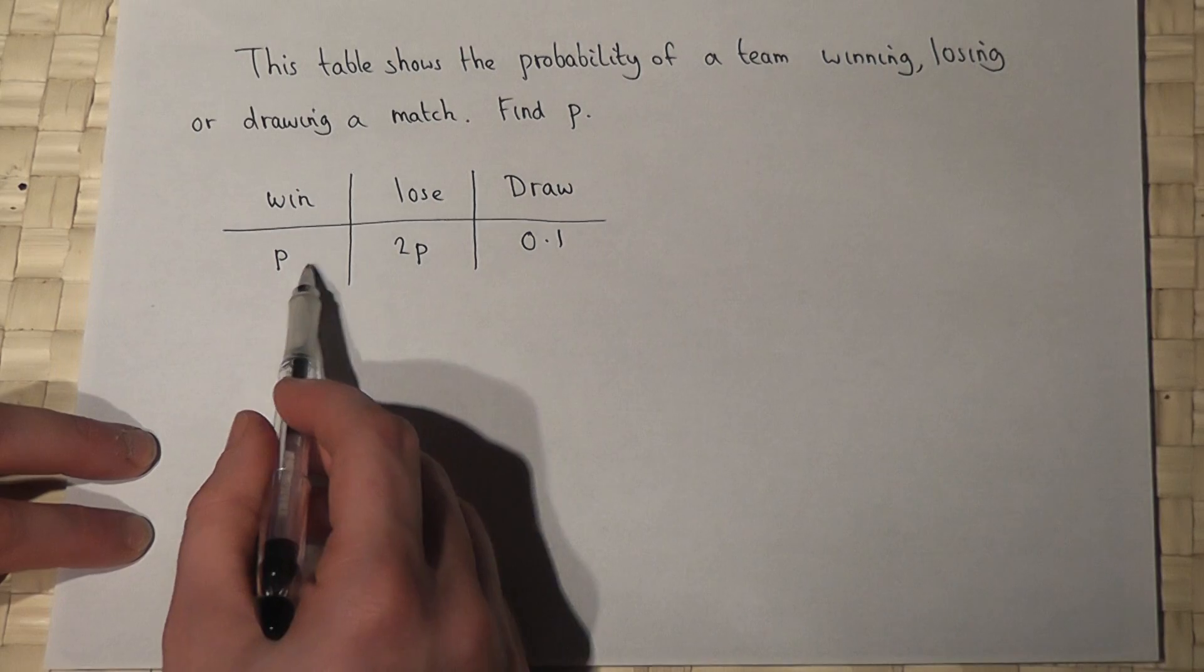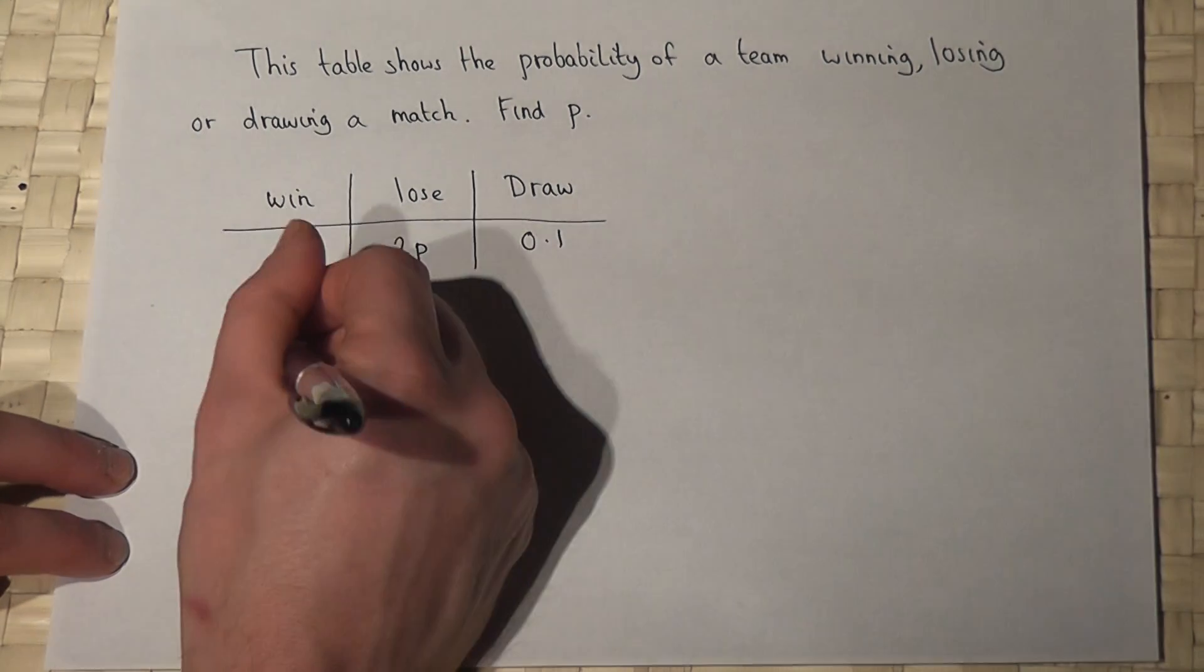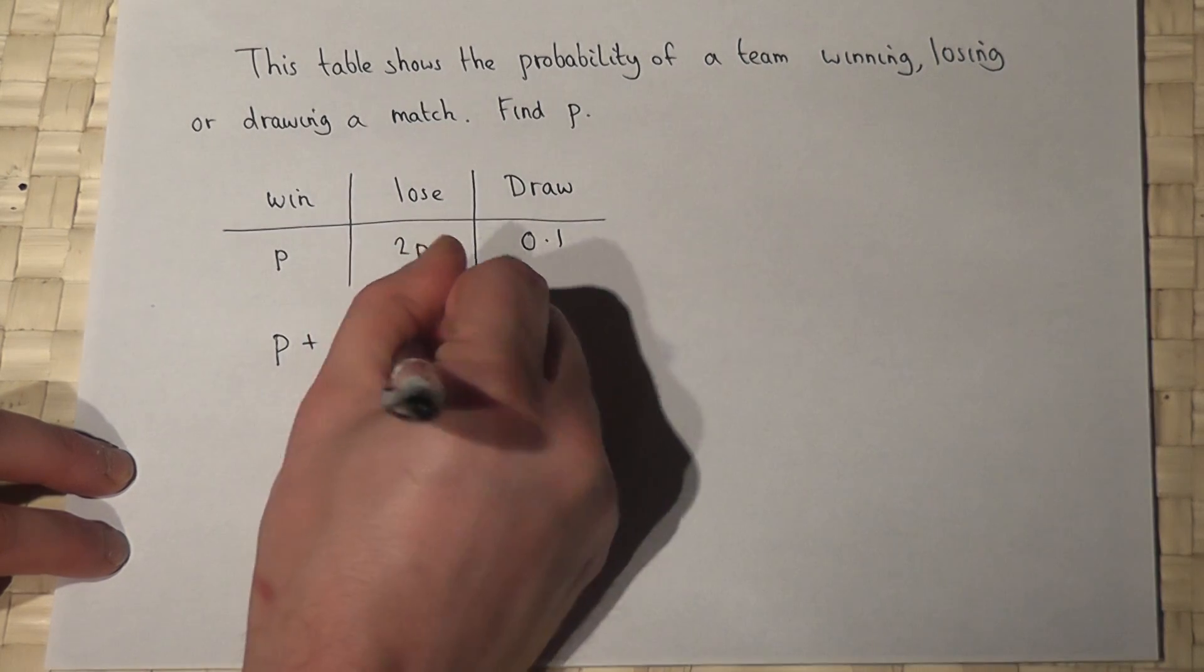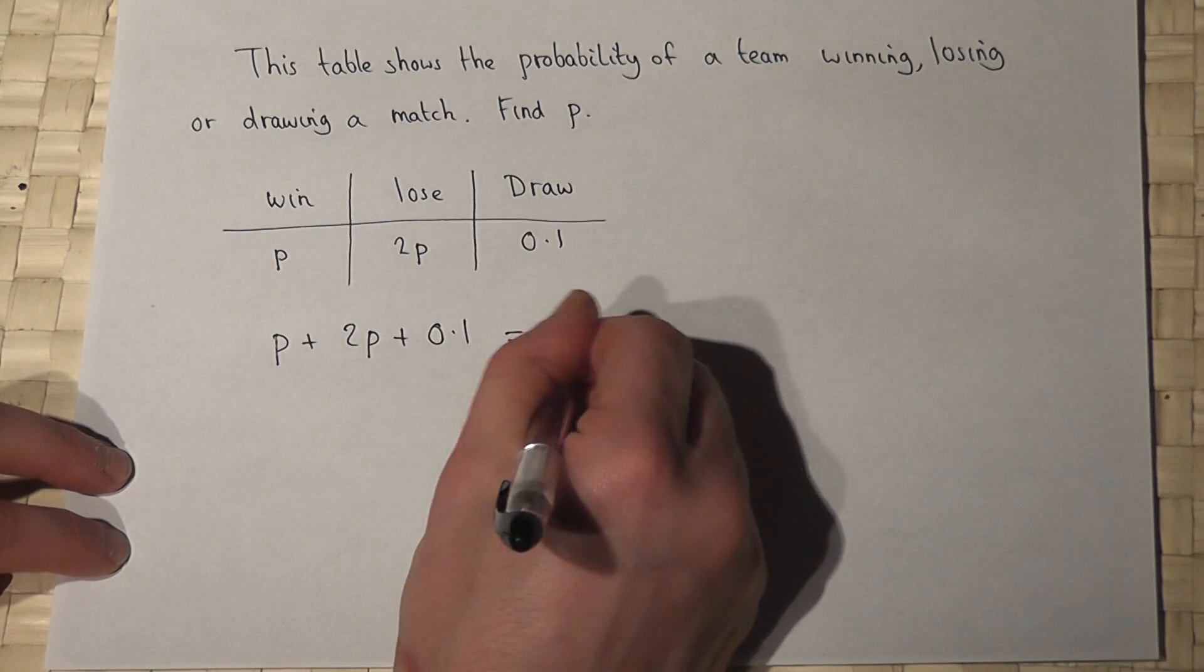Now then, these are the only three possible outcomes. So therefore, p plus 2p plus 0.1 must equal 1. That's the key number.